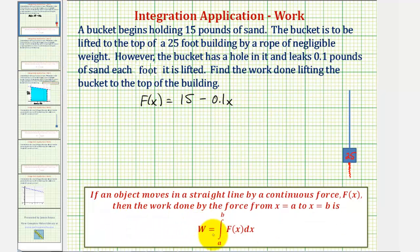Where work is equal to the definite integral of big f of x, our force function from a to b, or in our case a and b would be from 0 to 25 feet. So the work is going to be equal to the integral of 15 minus 0.1x from 0 to 25.